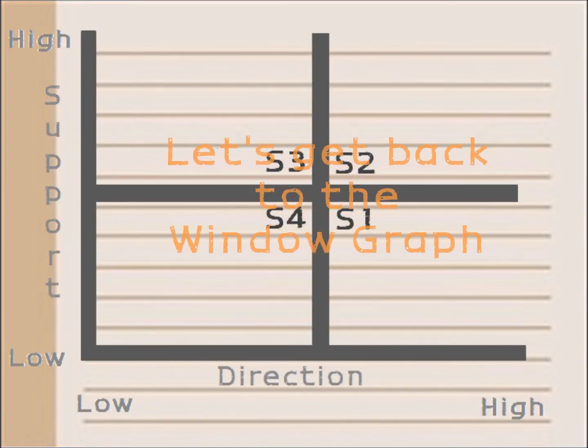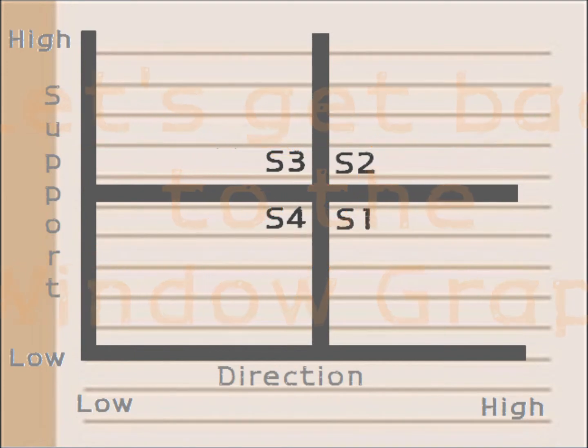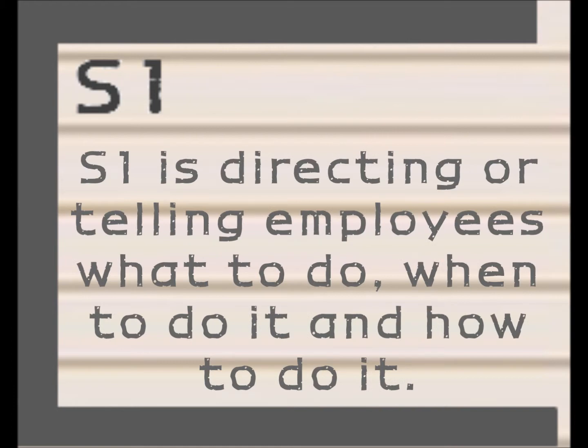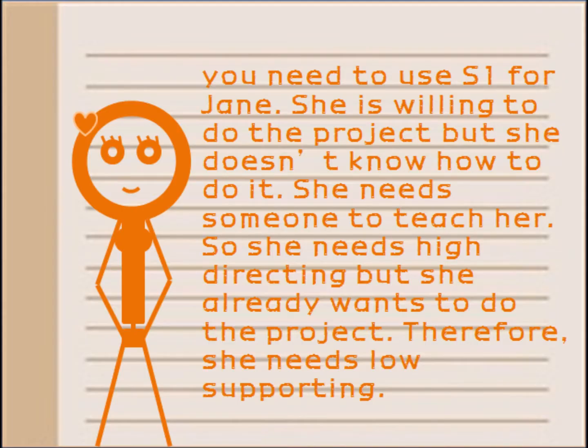Let's get back to the window graph. Starting with S1: S1 is directing — telling employees what to do, when to do it, and how to do it. You need to use S1 for Jane. She is willing to do the project but doesn't know how to do it. She needs someone to teach her, so she needs high directing but low supporting.